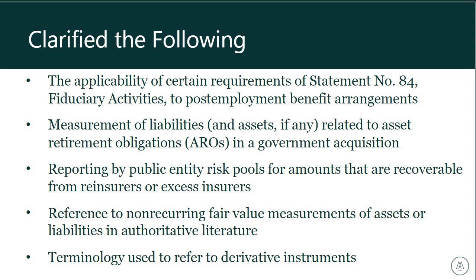The next item relates to measurement of liabilities and assets related to asset retirement obligations in a government acquisition. Typically assets would be reported at acquisition value, but this standard clarified that for asset retirement obligations specifically, GASB 83 still governs how they should be reported rather than using acquisition value — an exception to using acquisition value. The next item concerns reporting by public entity risk pools for amounts recoverable from reinsurers. Previously GASB 10 required reporting as a reduction to expenses. GASB 92 clarified this can be reported as a reduction in expenses but is not required, giving governments more flexibility.